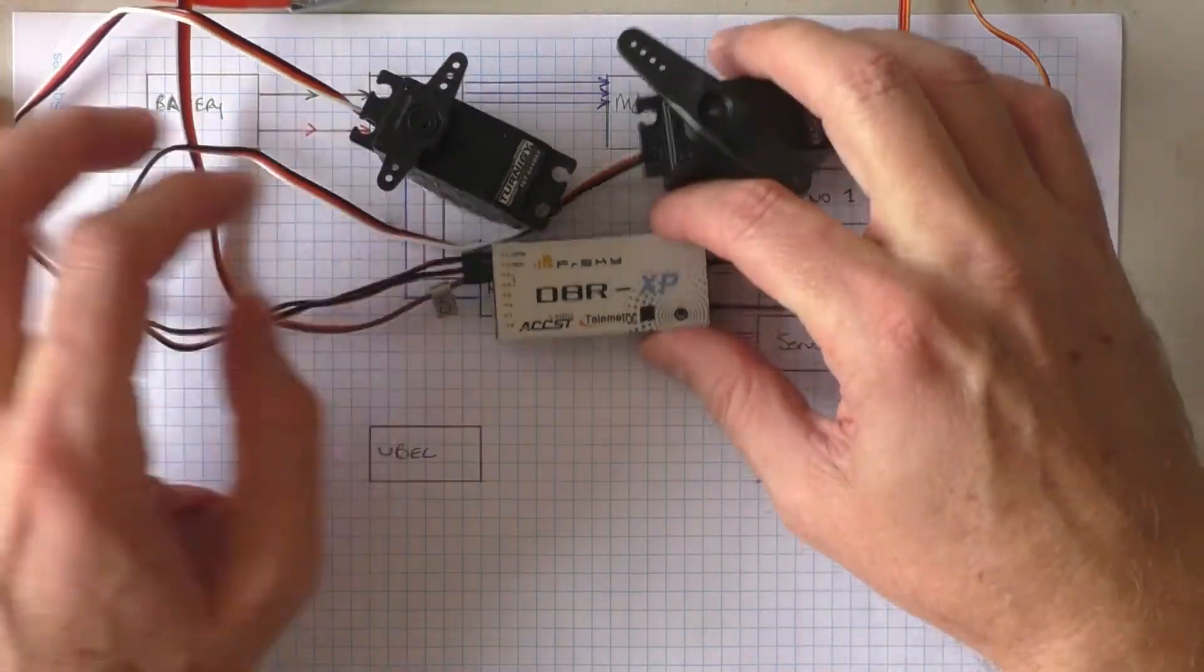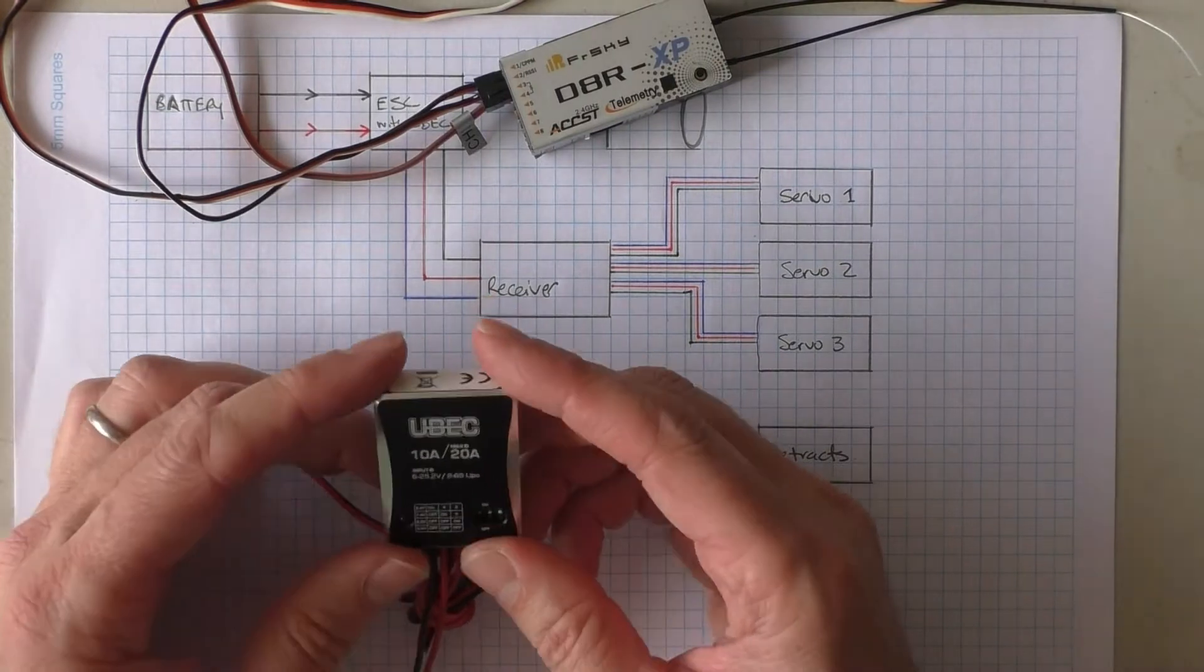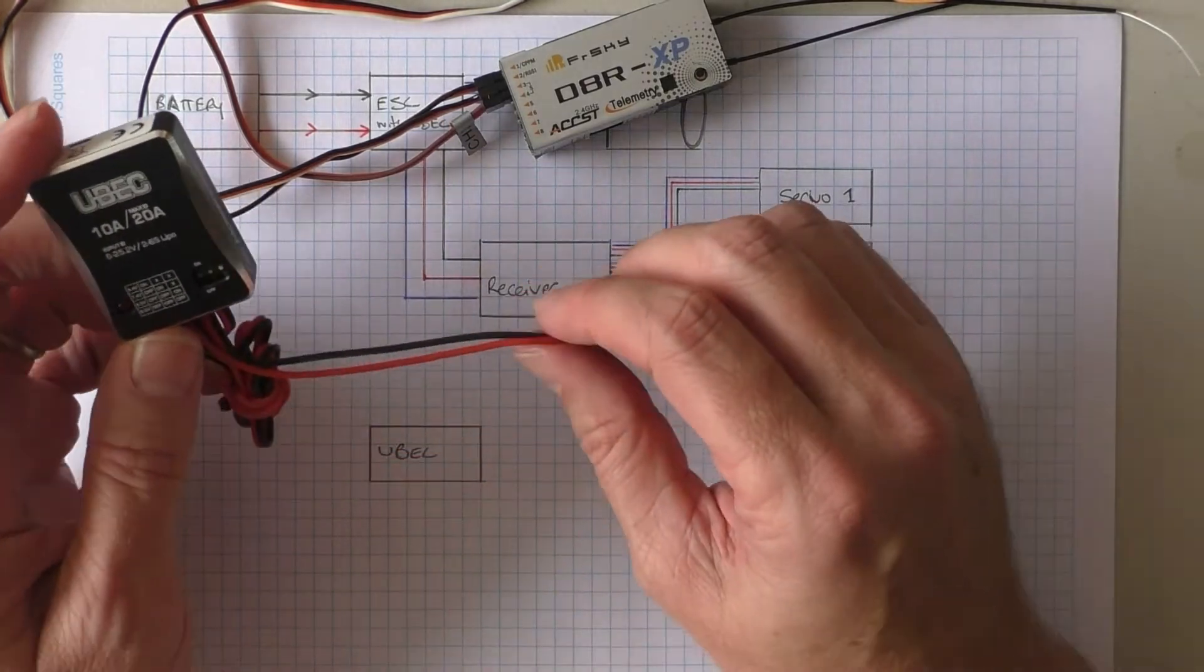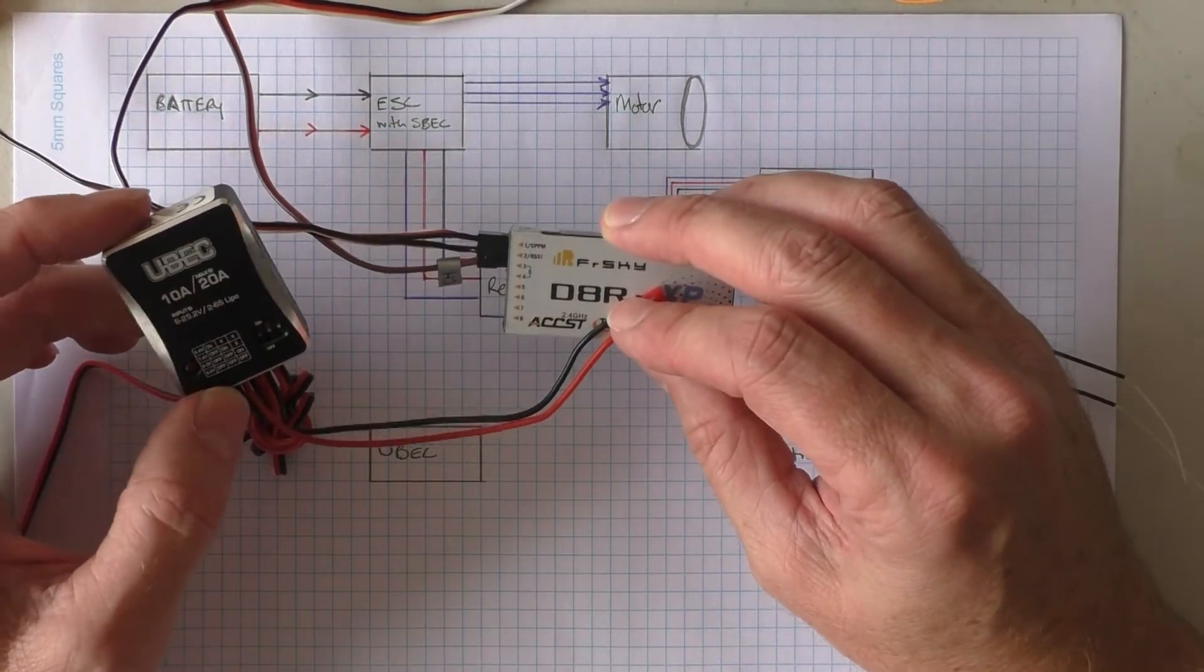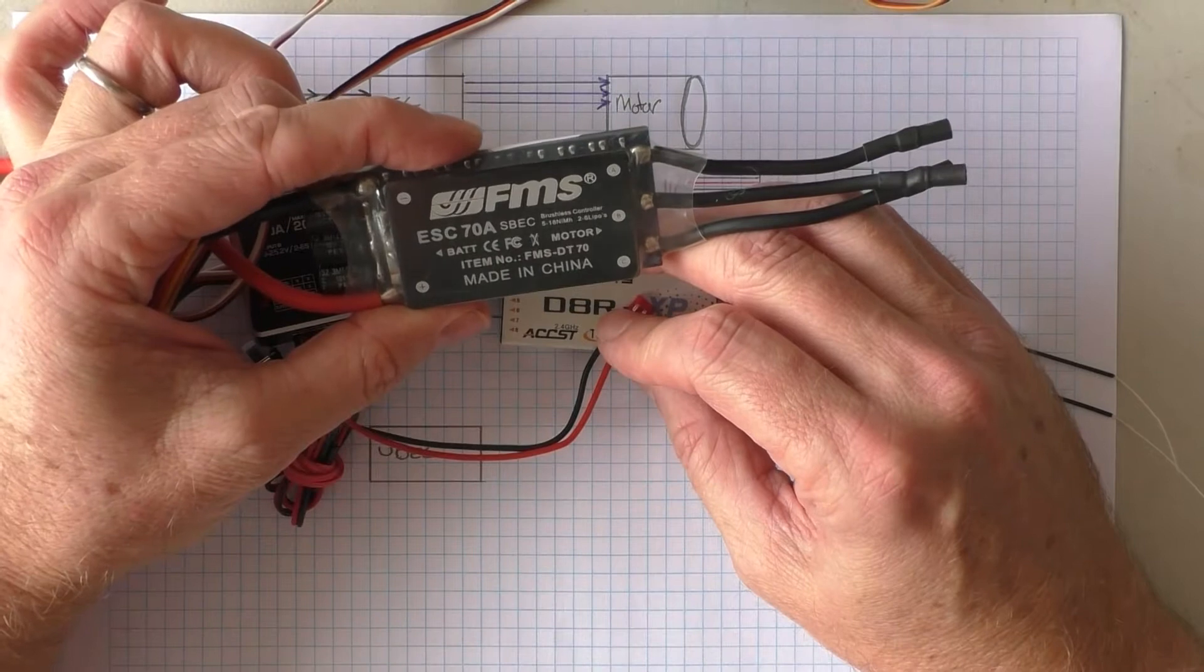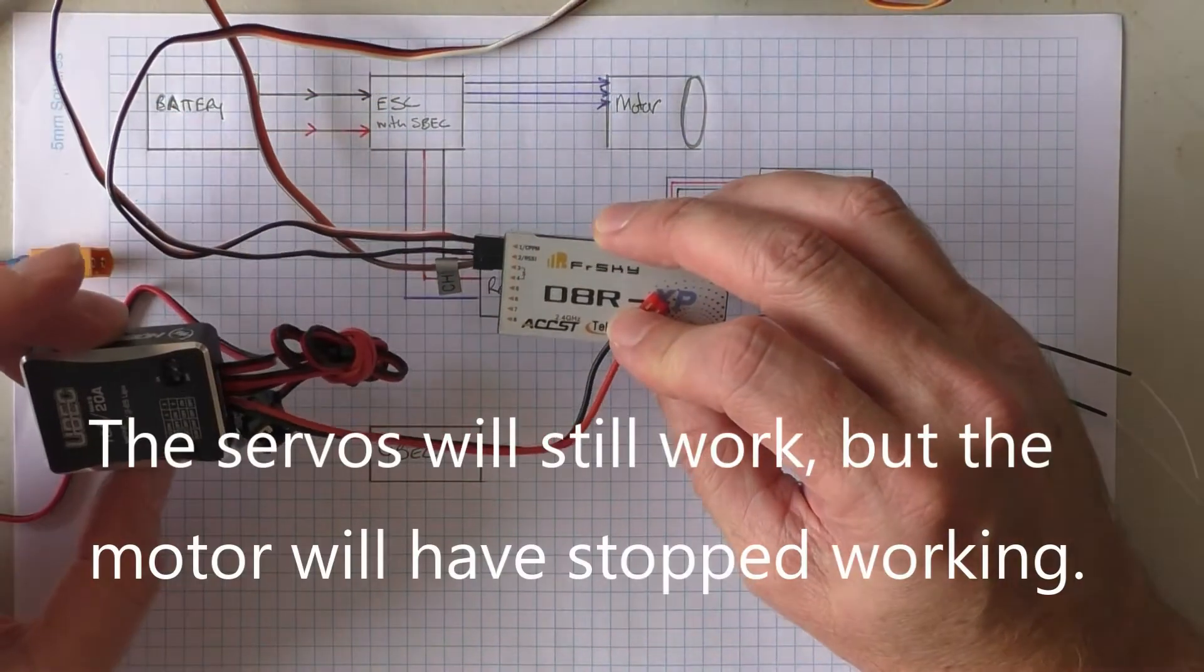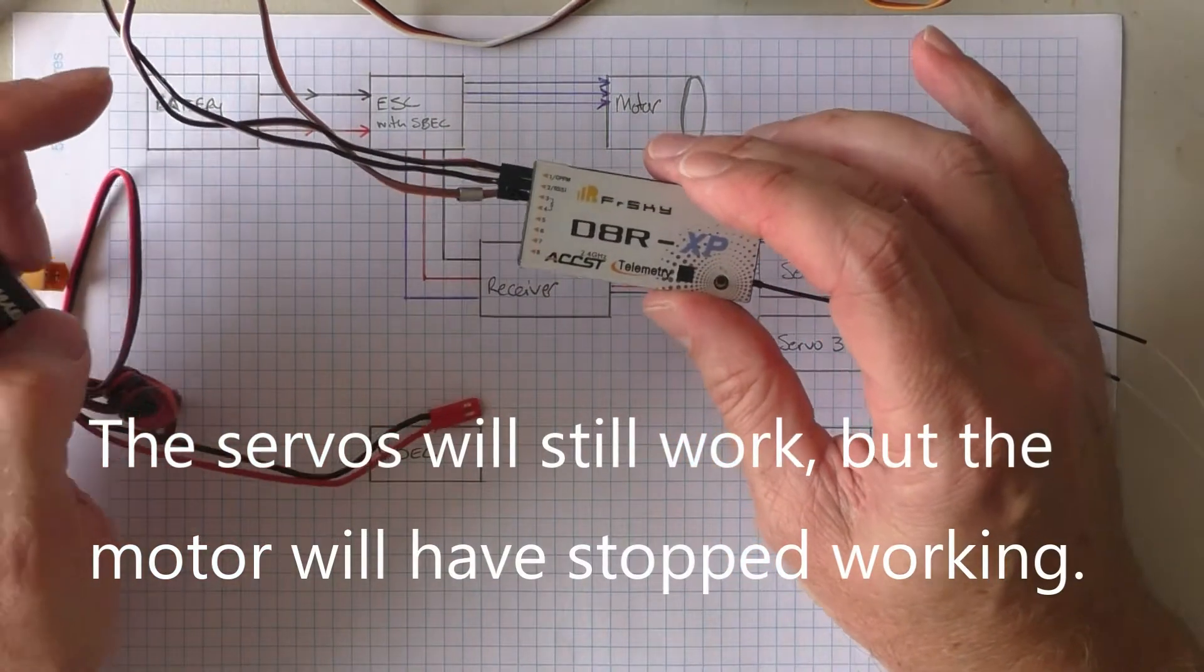So what a UBEC does is it gives you another source of power. Now, you can wire it a couple of ways. Some people actually wire the UBEC to power the receiver, so that if anything happens to the ESC, you still have a power supply running to your receiver, and you can still fly and land the plane.